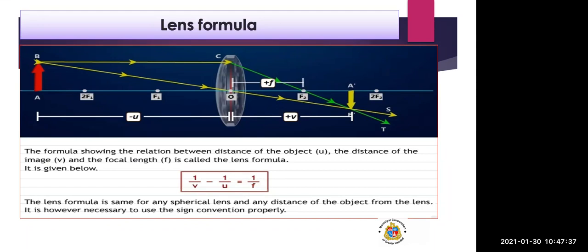In the diagram, AB is the object on the left-hand side and a convex lens is placed in the middle. From the optical center, a straight line is drawn and the distance of the object is measured from there. V is the image distance — A-dash B-dash is the image on the other side of the lens, and this distance is measured from the lens to the image.